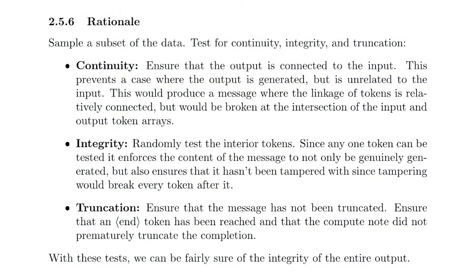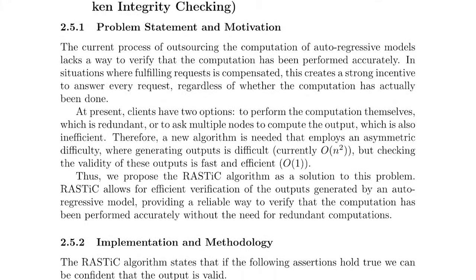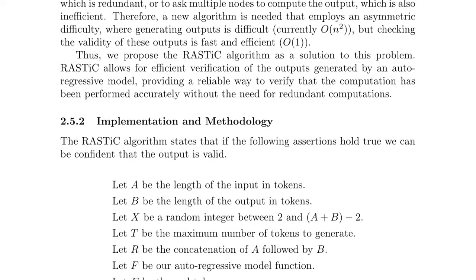We randomly select a token from the output and verify its authenticity. We then inspect the first token in the output to ensure its adherence with the input — this safeguards against outputs that may appear valid but lack alignment with the input's context. Next we assess the second-to-last token to determine if it corresponds to the end token, provided the token limit wasn't reached. If the token limit is reached, another random token is examined. This prevents instances where outputs are accurately generated but truncated prematurely by malicious actors. Using this approach we're able to validate outputs consisting of thousands of tokens, and the number of tokens subject to validation can always be incremented for added assurance.